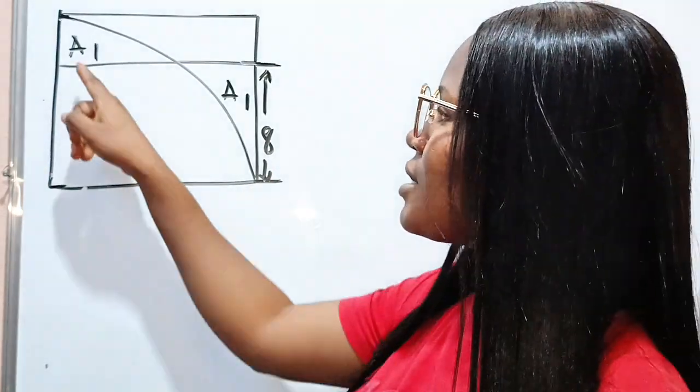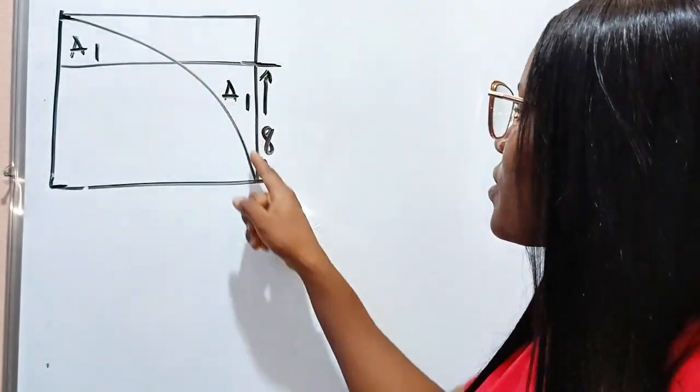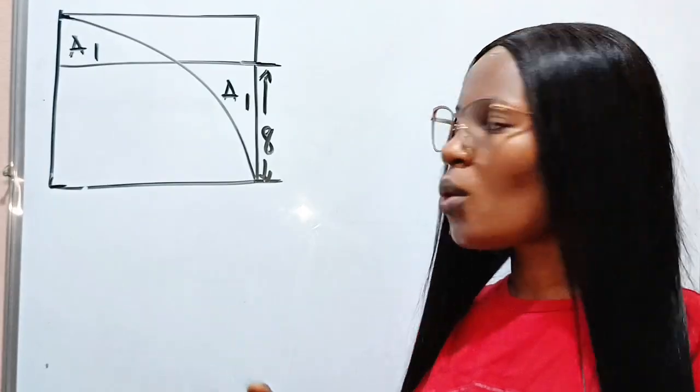And this is a one, and the area from here to here is also equal to from here to here. The areas are equal.